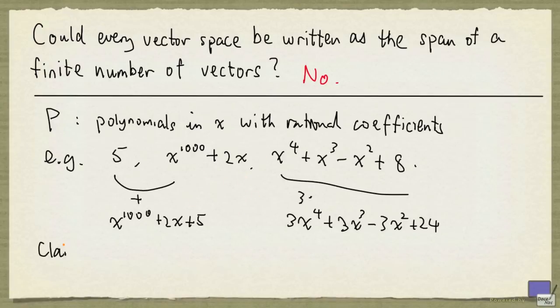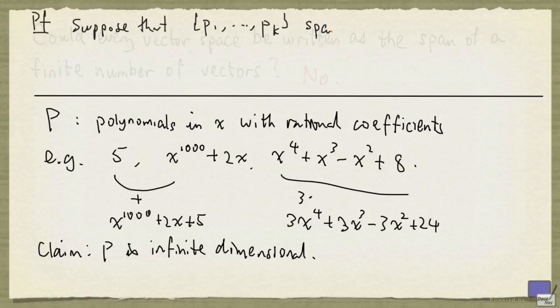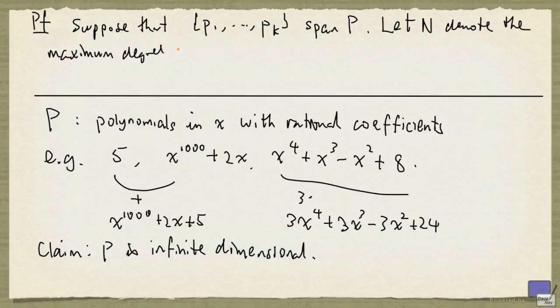The claim is that P is infinite dimensional. What that means is you cannot find a finite number of polynomials that would span P. And we'll see a proof of this. Suppose that the span of the vectors p1 up to pk is P. Now let N denote the maximum degree over the polynomials p1 up to pk. Then no linear combination of p1 up to pk can have degree larger than N.